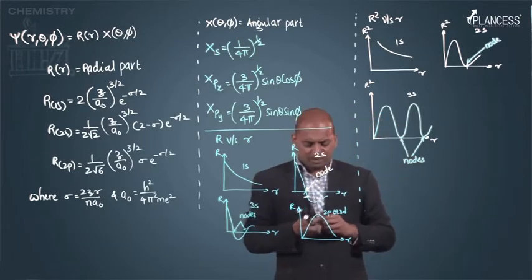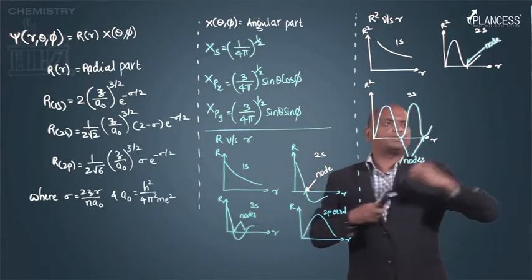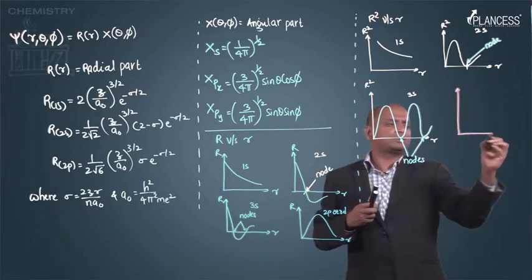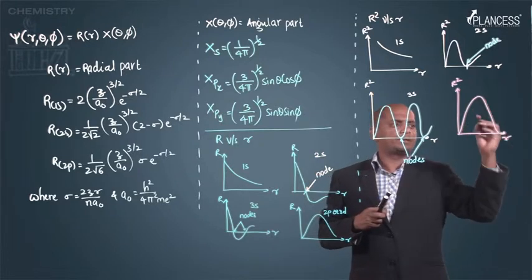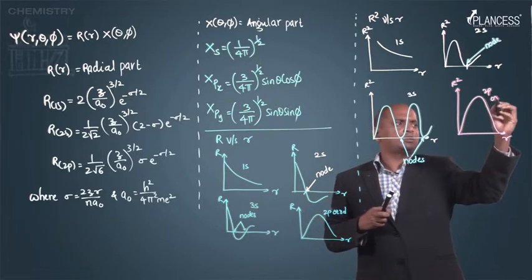These two are nothing but nodes for 3s orbital. If we plot a graph for 2p or 3d, the graph is similar, like this way only.